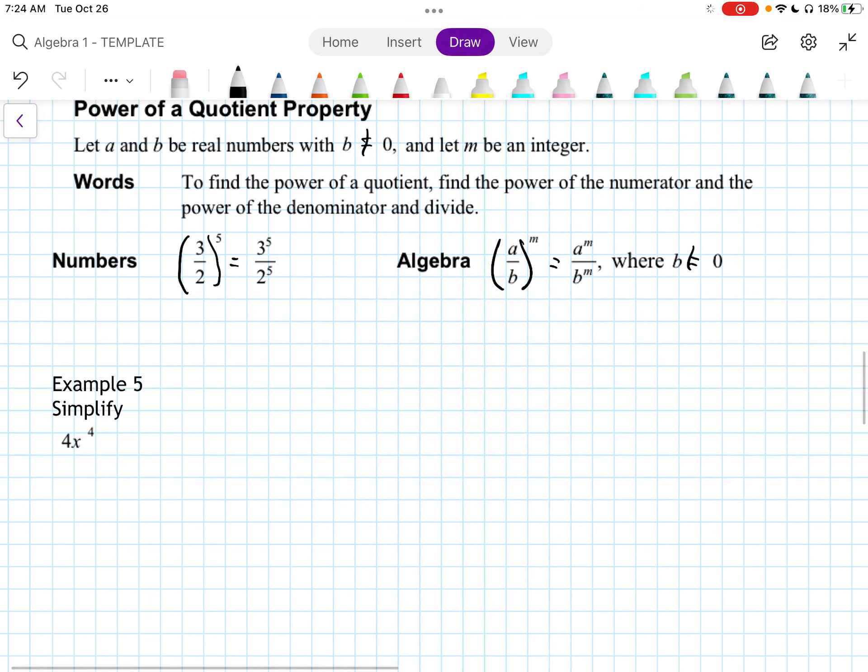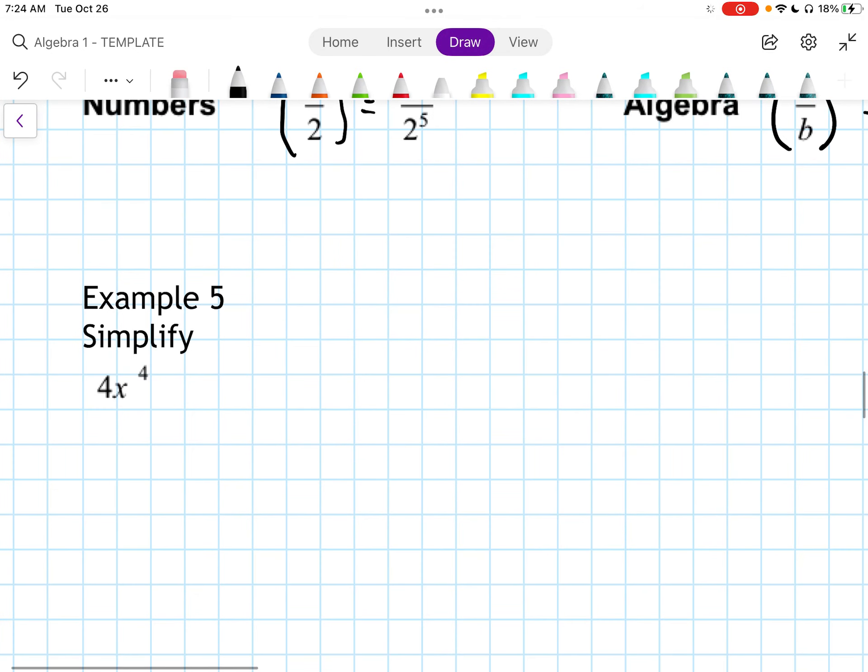Example number 5. This one is 4x to the 4th with parentheses. Well, we kind of distribute that exponent there. We'd have 4 to the 4th times x to the 4th. 4 to the 4th is 256, so this would be 256x to the 4th.